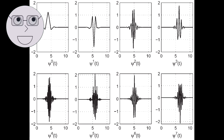The Coiflet Wavelet is a family of wavelets that are designed to be more symmetric than other wavelets. They are commonly used in image compression and denoising.